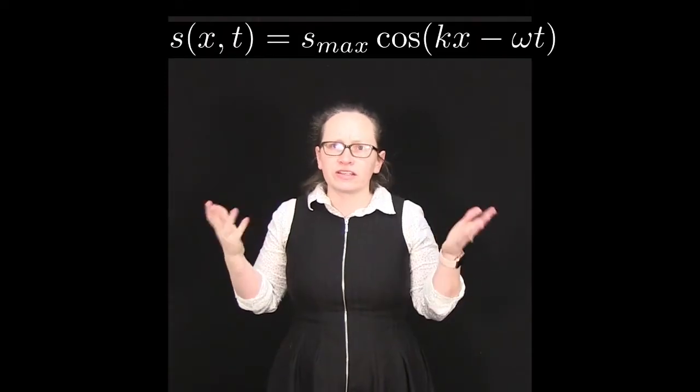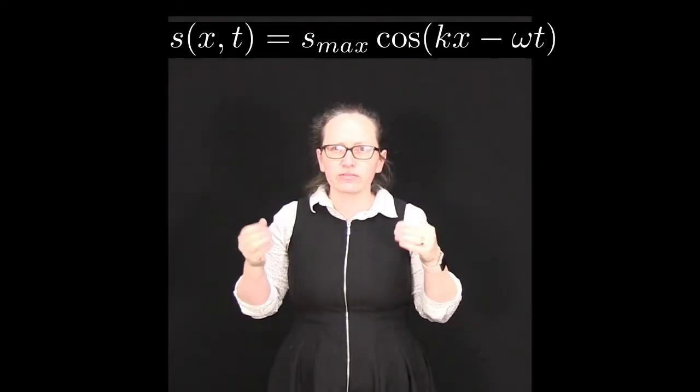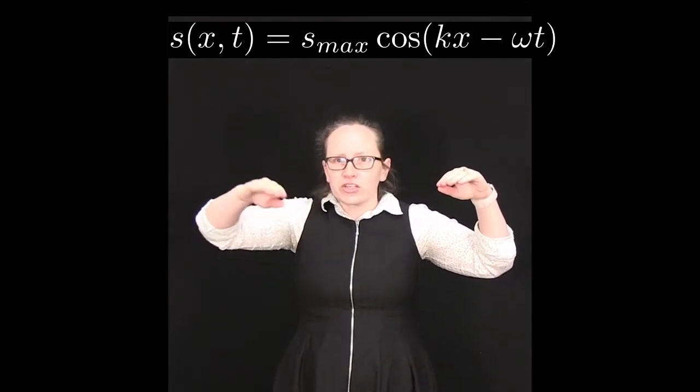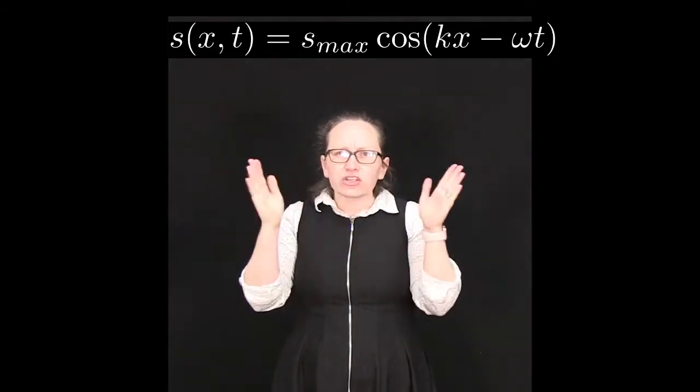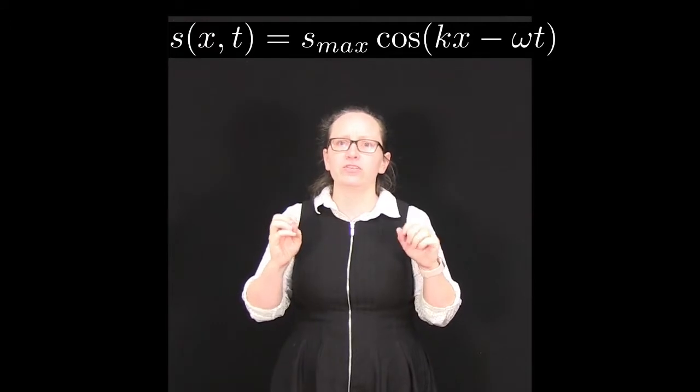Now that you've seen that, let's have a look at a graph which will clearly show you the relationship between the cosine function going up and down and the actual movement of the particles from their equilibrium positions.